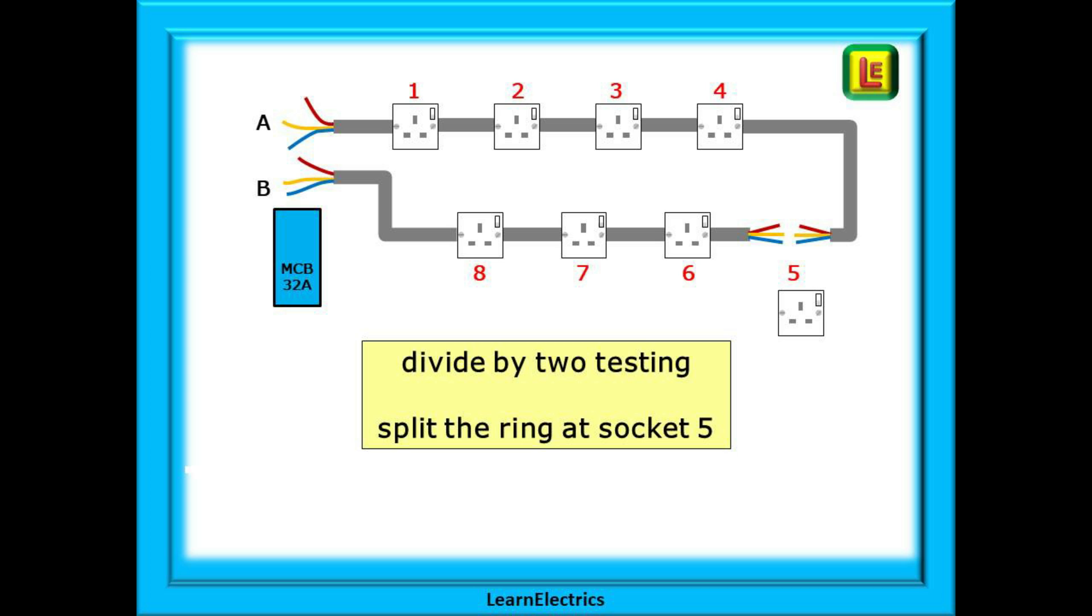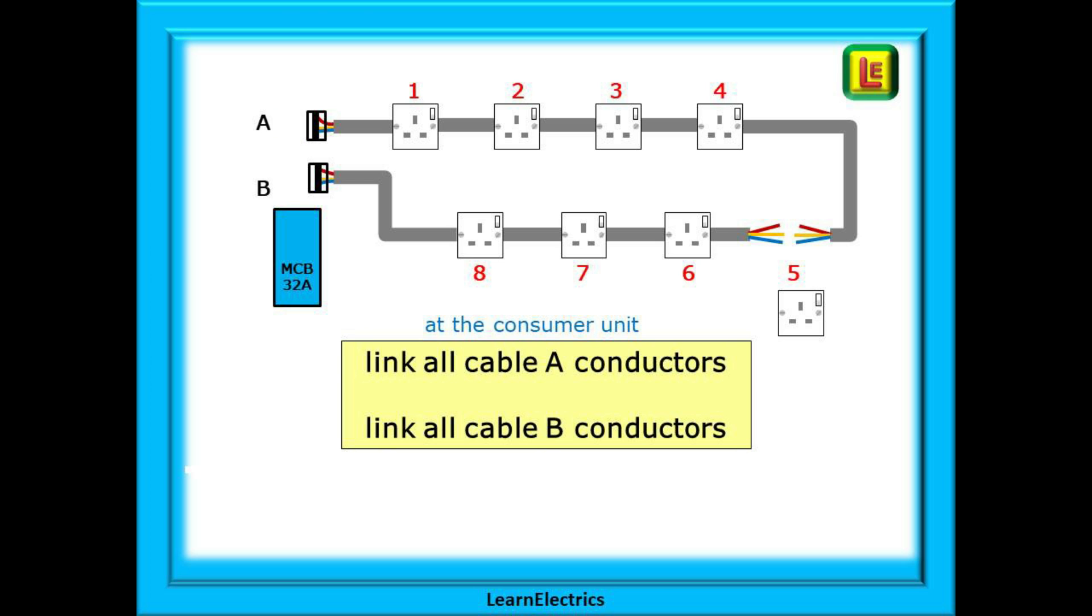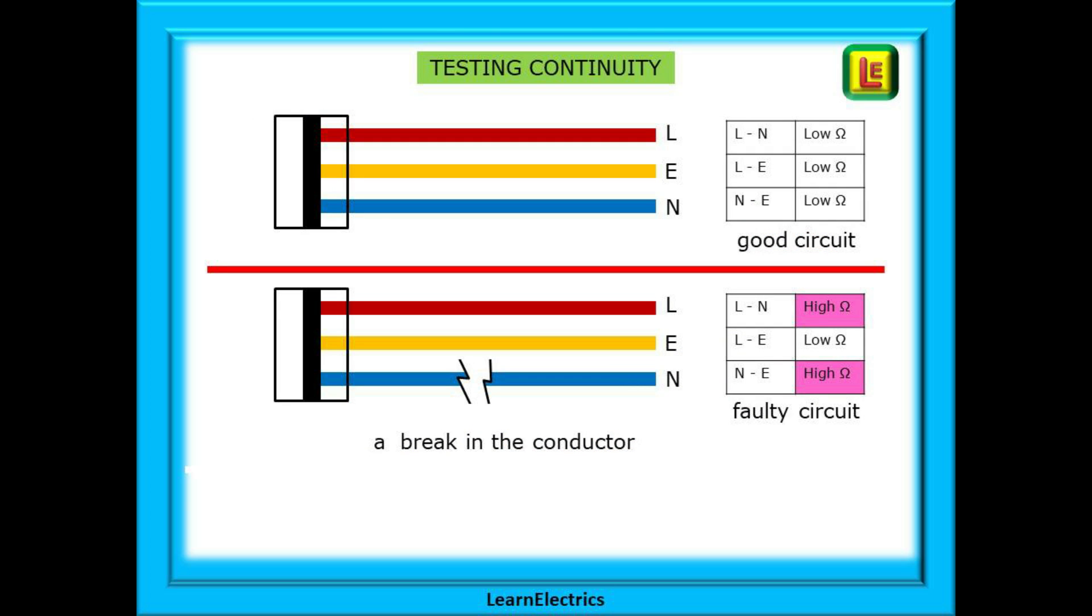Now at the consumer unit, link all the cable A conductors together—brown, blue, and earth—then do the same with cable B. Why do we do this? When testing, it saves a lot of time. Without these links, we would have to keep returning to the consumer unit and making new connections. The top circuit here is healthy, no problems. If we test between any two cables, the test voltage can travel to the connector block and back, giving a low ohms reading. But the lower circuit is faulty. This time only a test between live and earth will return low ohms. Any test that includes neutral will give a high ohms reading—a fail—because of the break in the neutral.